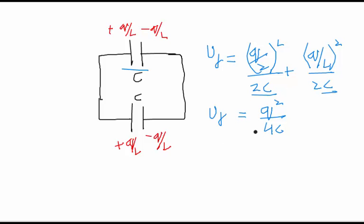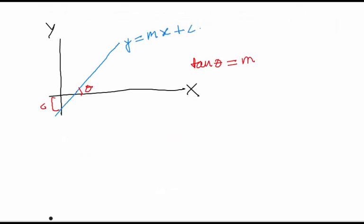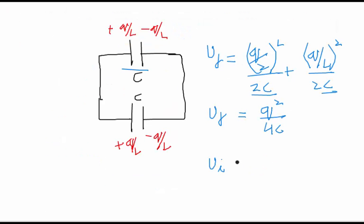And what was our initial energy? It was Q²/2C. So when we get the ratio of the two, when we find U_final/U_initial, we will get it as 1/2.